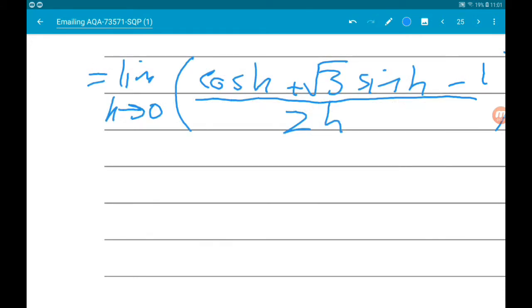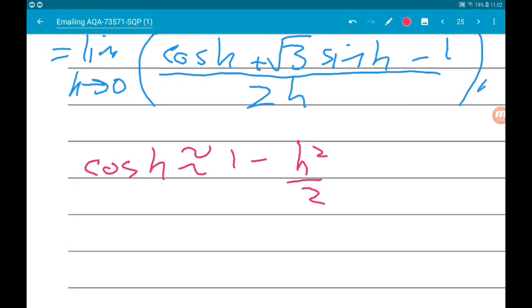So h is definitely small because it's tending to zero, so we're going to use cos of h is approximately one minus h squared over two, and sine of h is roughly h. So if we substitute those in...